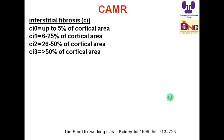Today I'll show you the terminology for chronic antibody-mediated rejection. When we add letter C before I, this means chronic interstitial changes — that is, interstitial fibrosis. Up to 5% is scored CI0. Between 6 to 25% of the cortical area affected by interstitial fibrosis is CI1. Between 26 to 50% is CI2, and if fibrosis affects more than 50% of the cortical area it is CI3.